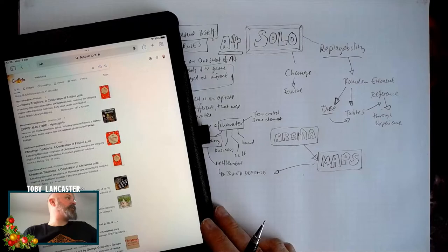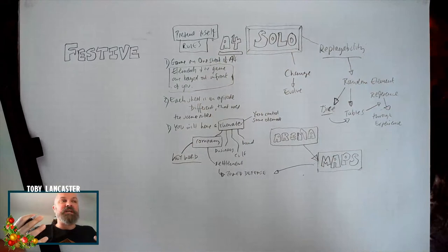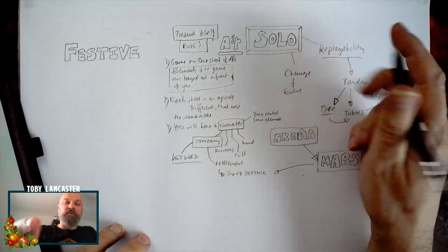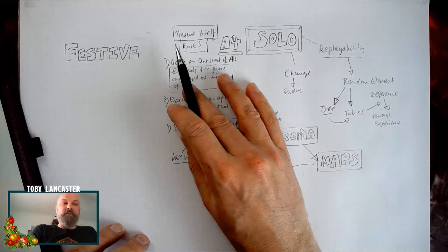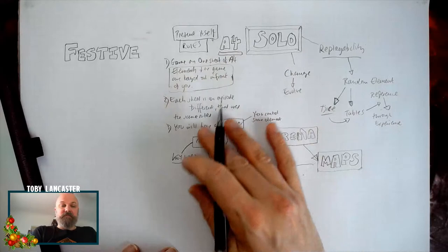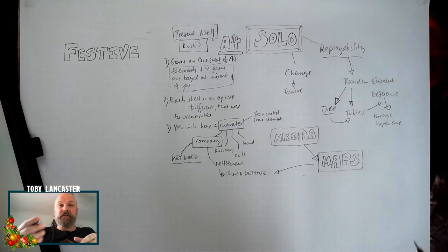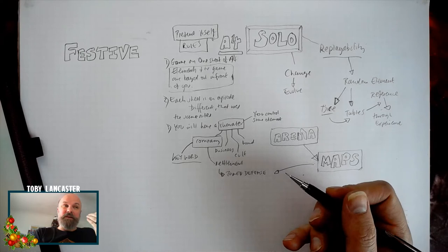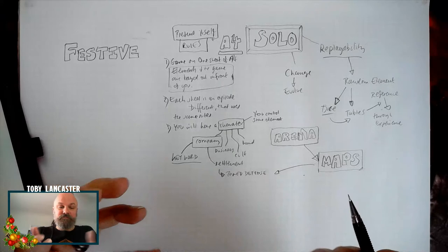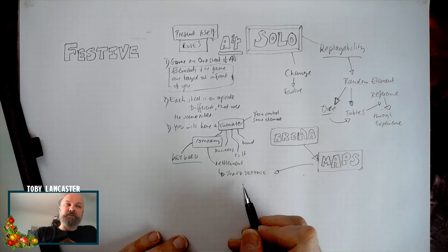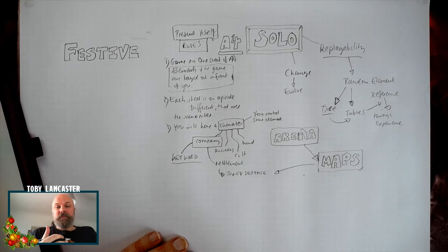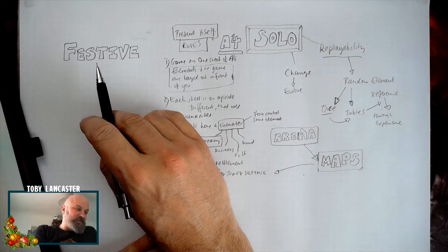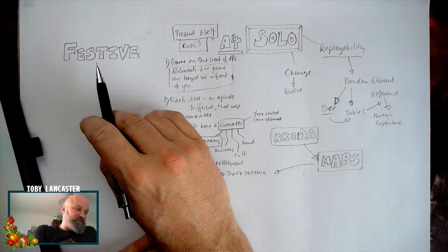Just to recap for Cody: we're designing a solo player game. I want something replayable, on one sheet - A4 or letter - and I want those to be episodes where you can carry on the same character. We were thinking about whether we want a character, a company, a business, or a cult that you control and manage. 'Company' becomes a key word and ties with tower defense, though I'm not really into that personally.